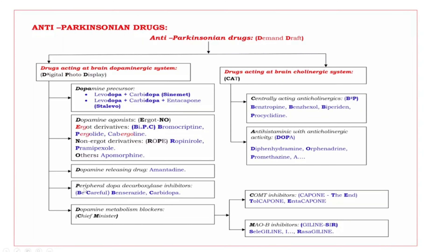The fourth subgroup is peripheral dopa decarboxylase inhibitors. Be careful — the bold letters are B and C. B: benserazide. C: carbidopa.